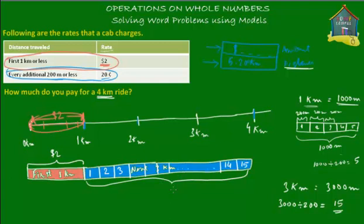We don't know yet how much the cabbie will charge for that, but we know that for every 200 meters after the first kilometer, every 200 meters is chargeable at 20 cents — every 200 meters or less. So if you travel less than 200 meters, you still pay 20 cents. Whether you travel 100, 150, or 200 meters, you still pay 20 cents. And for the next 200-meter segment, it's the same — you pay 20 cents.